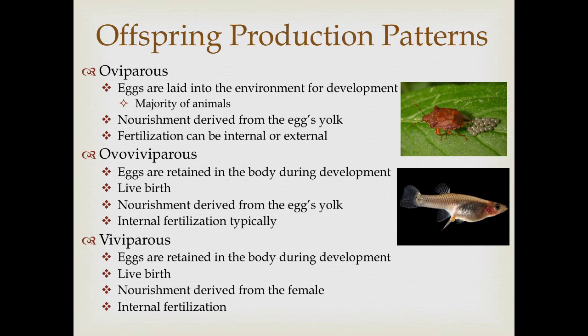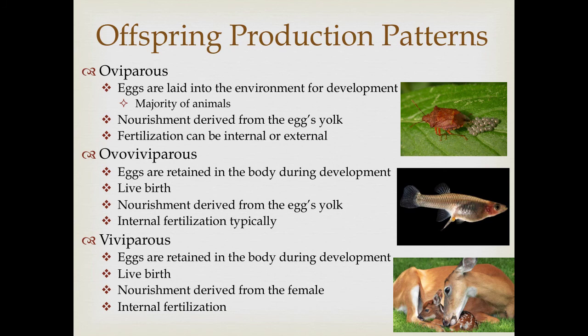The typical live birth we think about is associated with viviparous animals. Viviparity is similar to ovoviviparity — eggs are retained in the body and live birth occurs — but the nutritional source differs. In ovoviviparity, nutrition comes from the egg's yolk, but in viviparity there's a direct connection between the mother's system and the developing embryo, nourishing it from the female's physiology. The classic example is mammalian reproduction, where a placenta connects the maternal blood supply to the developing young.